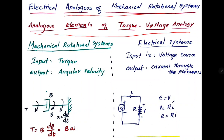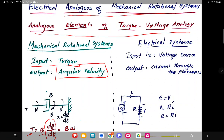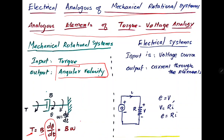First, I am going to take a dashpot. The input to the dashpot is torque and output is angular velocity. This is mapped using the equation: applied torque is equal to B into d-theta by dt, which is the rate of change of angular displacement, equal to B into omega.